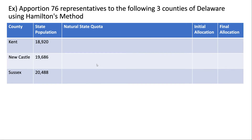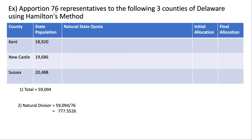Let's look at another example. Here we want to apportion 76 representatives to the following three counties of Delaware using Hamilton's method. I would suggest pausing the video here, trying to go through this on your own, and then watching the rest of the solution. The first thing we need to do is find the total population by adding up all of the state populations. Next we find our natural divisor by dividing our total population by our house size, which is 76.